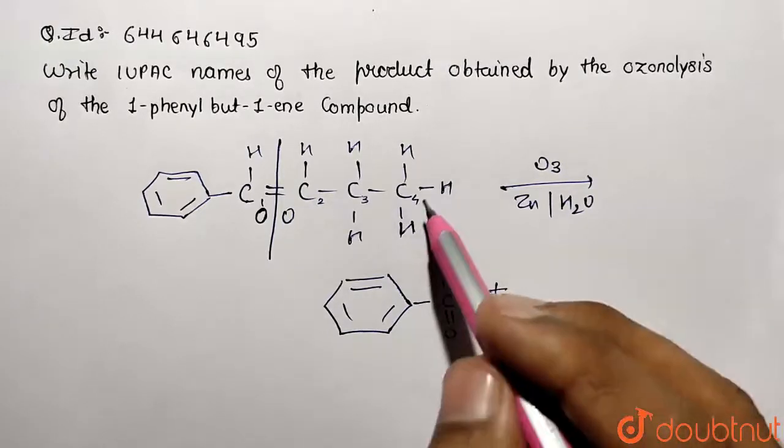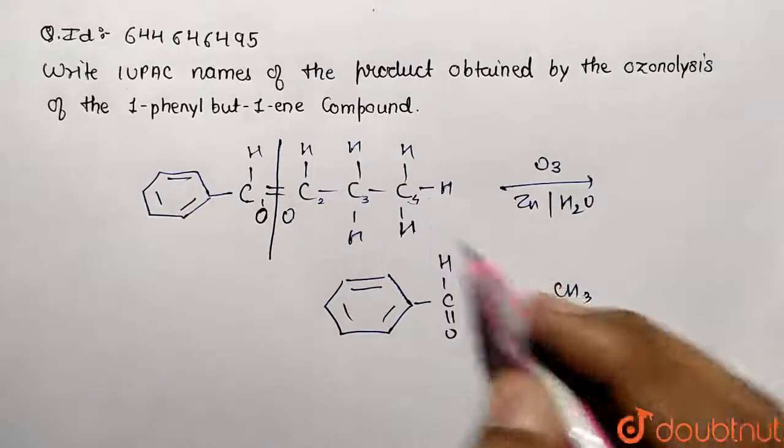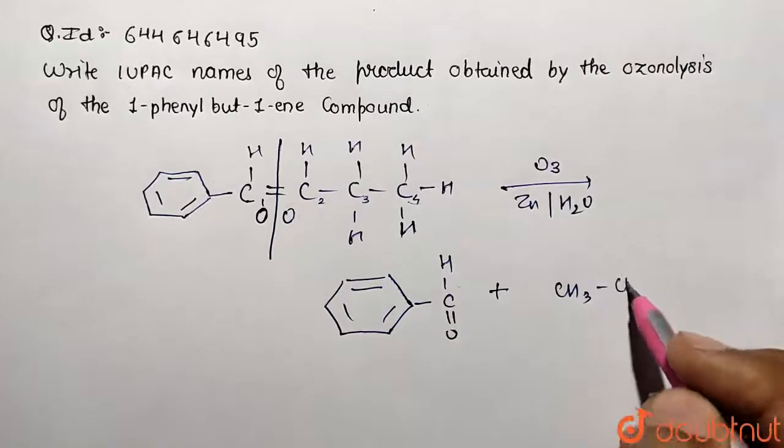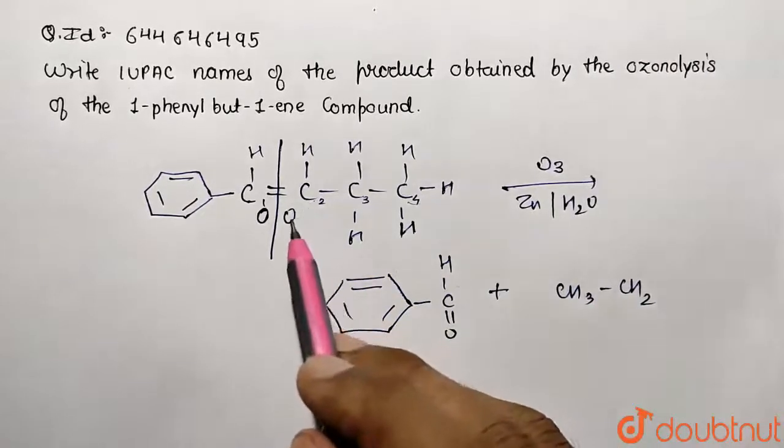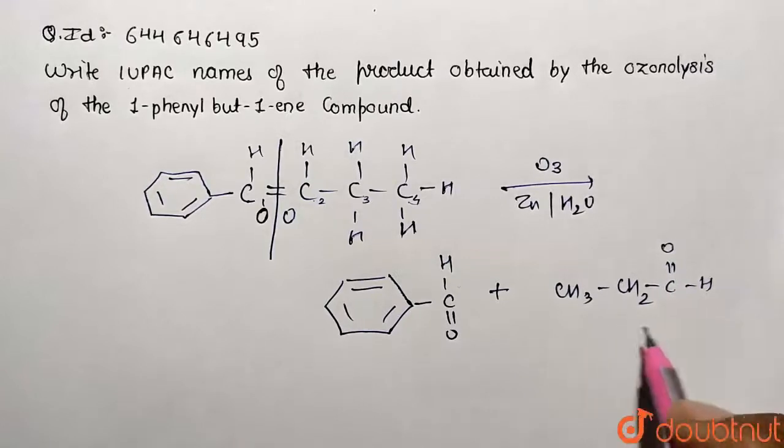Similarly over here, this is going to be the same compound and I'm writing from the right hand side: CH3, then followed with CH2. Now this carbon is going to form double bond with oxygen, so it's going to be represented double bond O and hydrogen over this side.